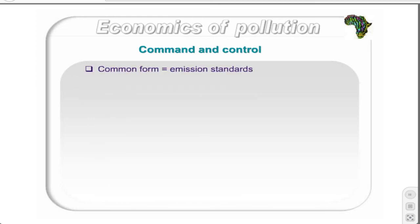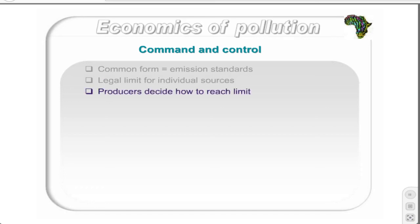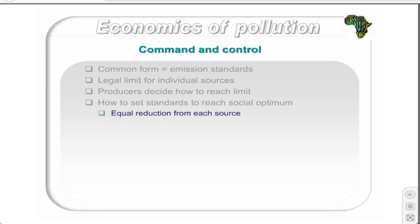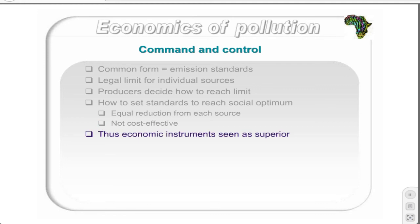The most common form of command and control intervention is the emission standard — a set legal limit of pollution that individual sources may emit. Producers are allowed to decide how to reach that limit. The key question is how the standard should be set to reach the social optimum level of pollution. This is done by selecting an equal reduction level from each source of pollution. However, this is not cost effective, as all individual producers are expected to reduce their pollution by the same amount regardless of individual costs. Certain firms can reduce pollution relatively cheaply, while others must incur much larger expenses. Due to this cost-effectiveness issue, economic instruments are considered superior to command and control interventions.